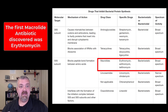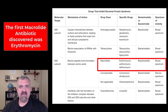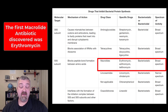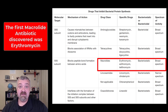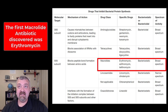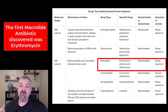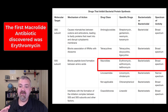So the macrolides — they were first discovered in, I believe, 1952. They found them in a Streptomyces, which is very common. About half the antibiotics that exist today come from that Streptomyces family. It was Streptomyces erythreus, I believe. The first one discovered was erythromycin.